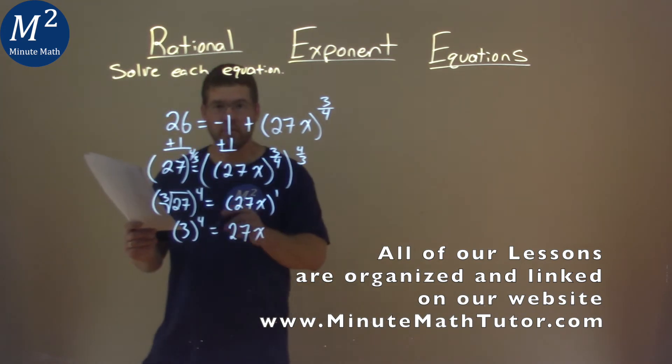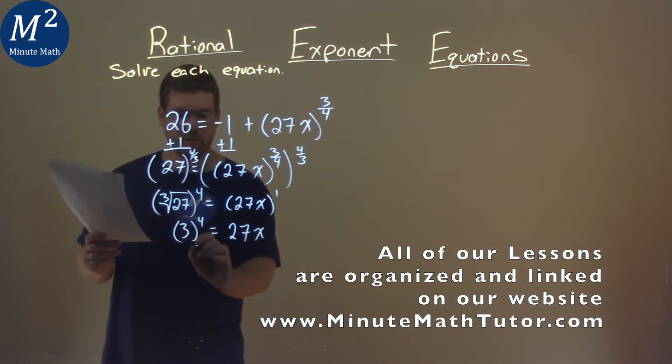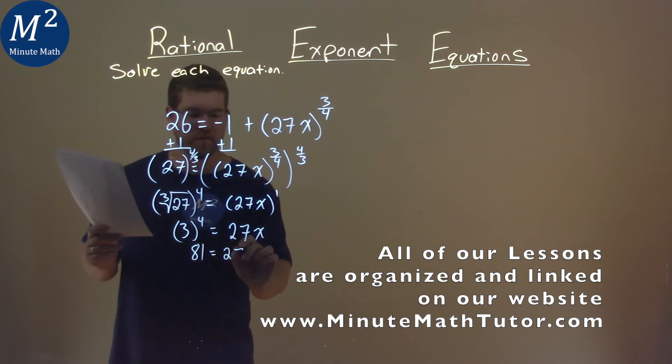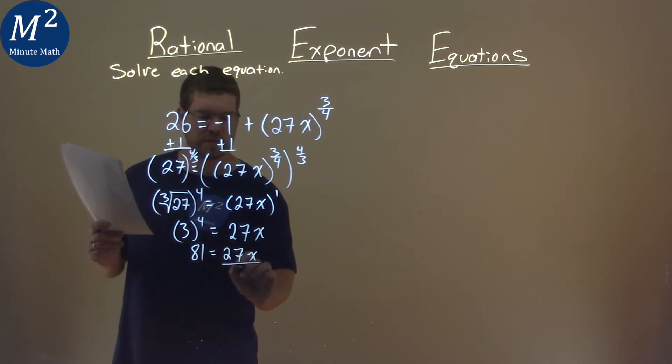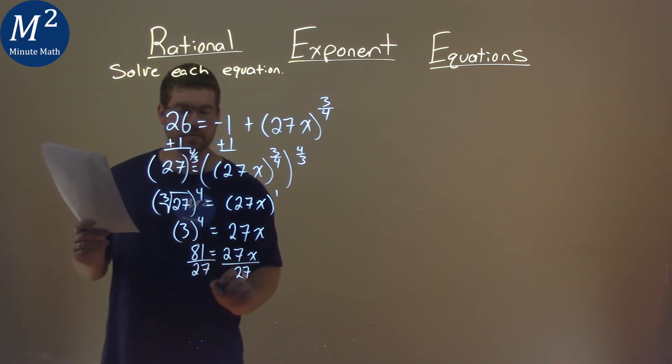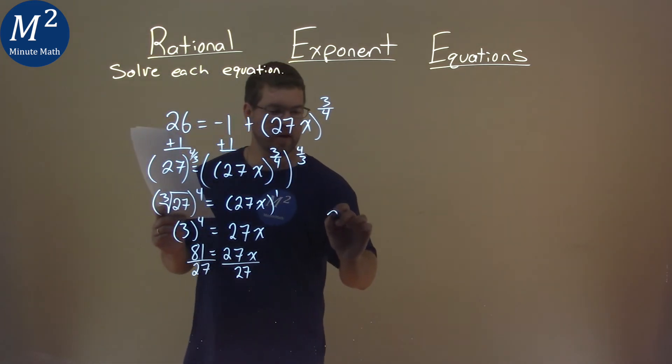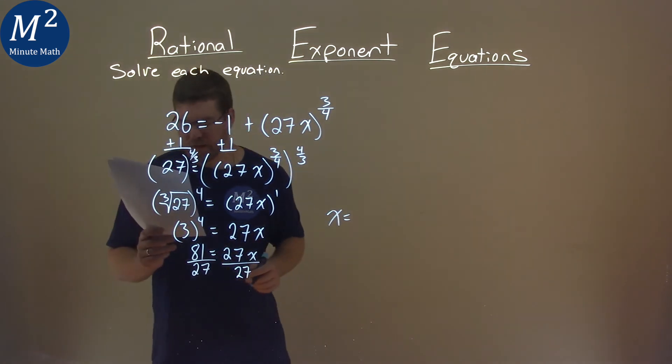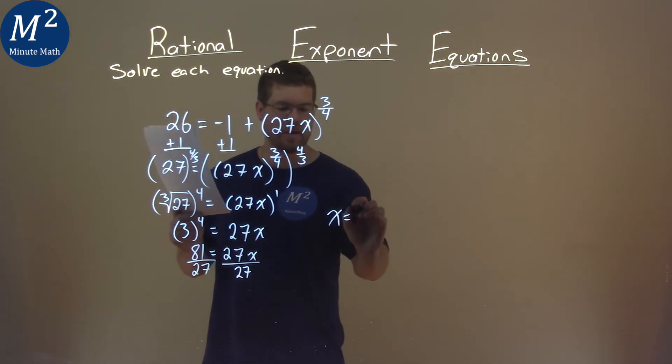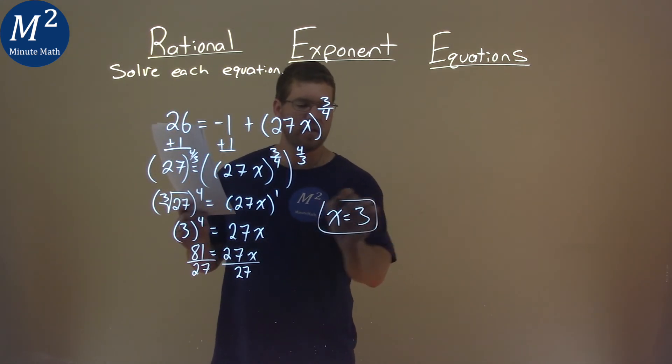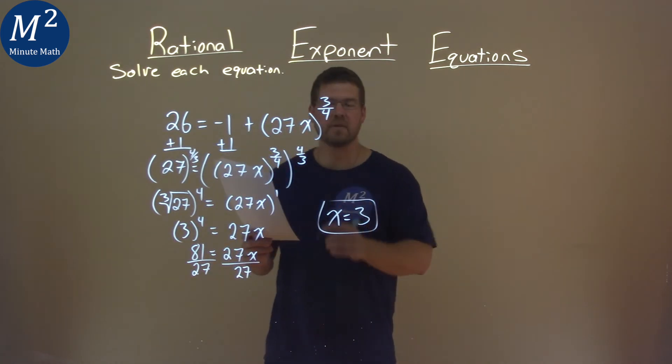Then from there, 3 to the fourth power is 81, equals 27x. Our rules say we divide both sides now by 27, right? And we have x completely by itself, we'll put it here, and 81 divided by 27 comes out to be 3. And so my final answer here is x equals 3.